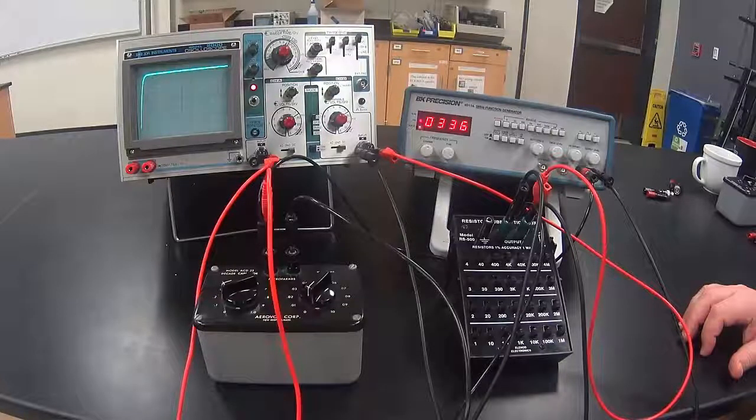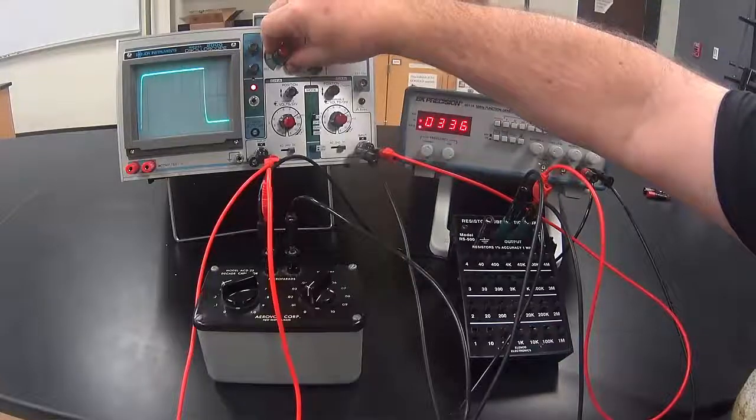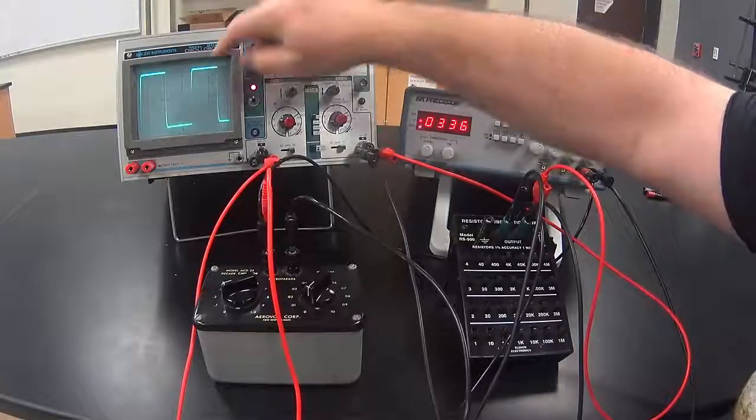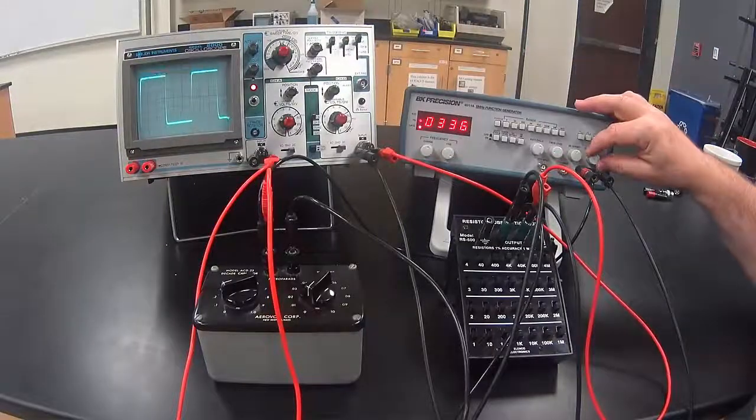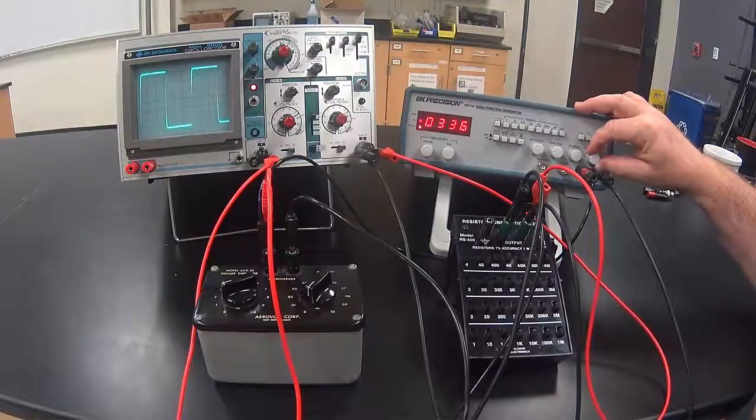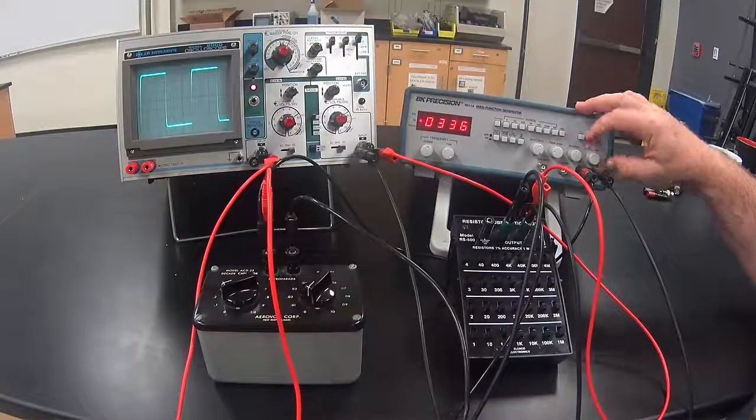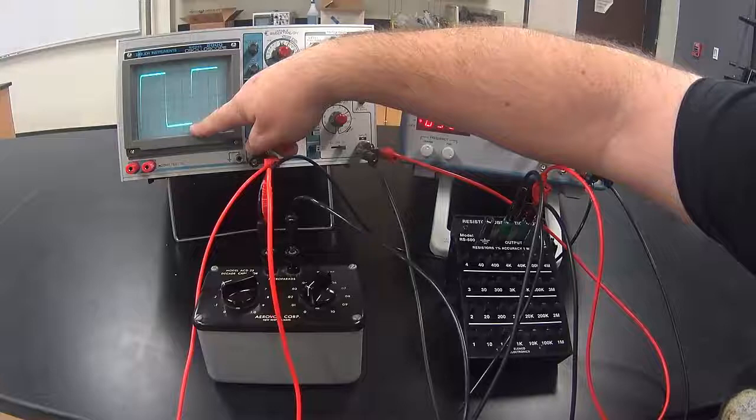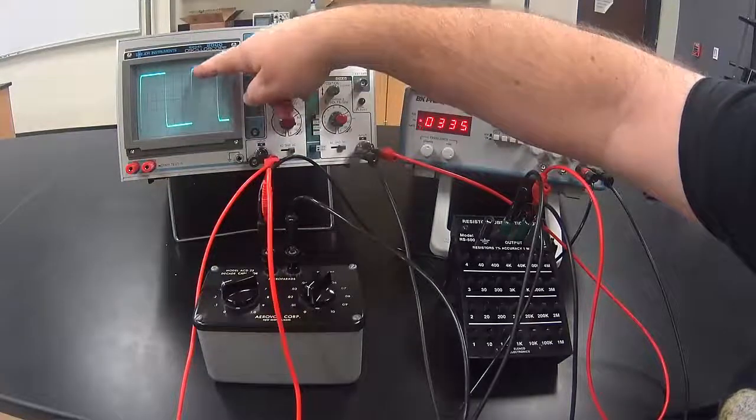Adjust the time per division so that we can clearly see a couple periods and see where the highest and lowest voltages are. Adjust the output voltage on the function generator and the vertical positioning on the volts per division knob of channel A to get the signal where the top and bottom are at convenient places for measuring.